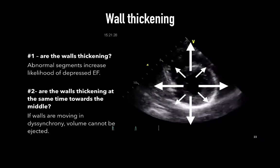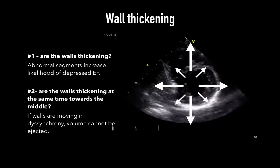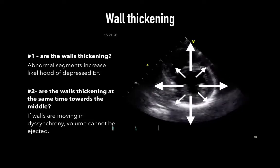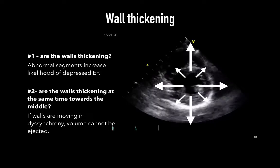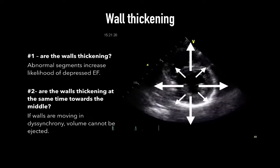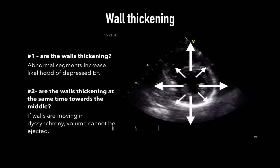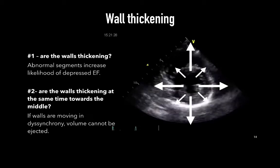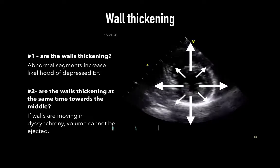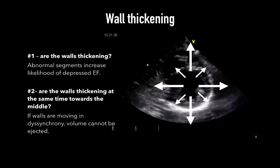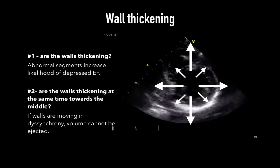Thickening of the wall can be approximated to a biceps contraction from an extended position — the number of fibers are the same, but as the elbow is flexed, they become more compacted and thick. The second question is: are the walls thickening at the same time and towards the middle of the cavity? This is important because if a wall moves towards the center while another is pushed away, there is no net ejection of volume — the cavity has not shrunk, so no volume has left.